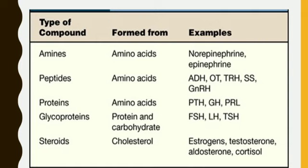This table shows types of compounds, how they are formed, and examples. Amines are made from amino acids; examples are norepinephrine and epinephrine. Peptides are made from amino acids; examples are ADH, OT, TRH, SS, and GnRH. Proteins are made from amino acids; examples include parathyroid hormone, growth hormone, and prolactin. Glycoproteins are made from protein and carbohydrate; examples are follicle stimulating hormone, luteinizing hormone, and thyroid stimulating hormone. Steroids are made from cholesterol; examples are estrogen, testosterone, aldosterone, and cortisol.